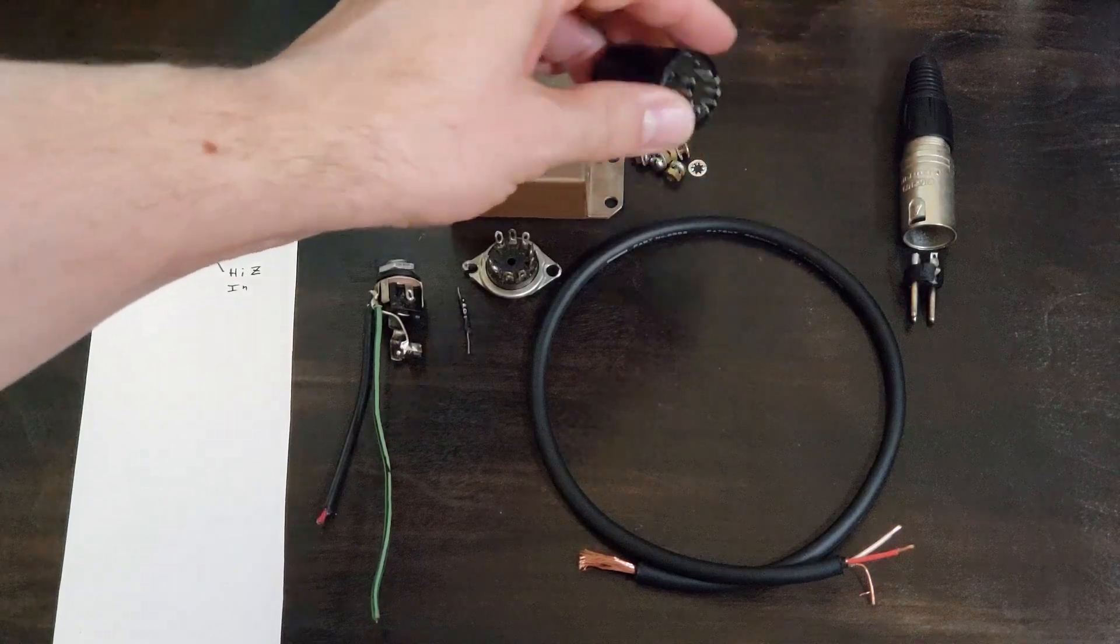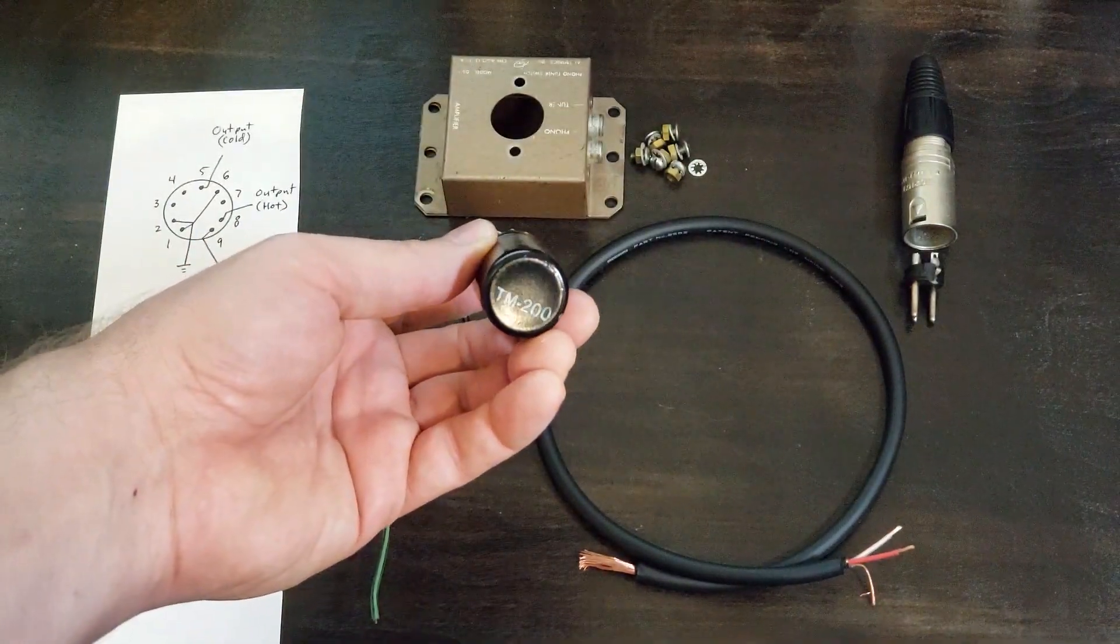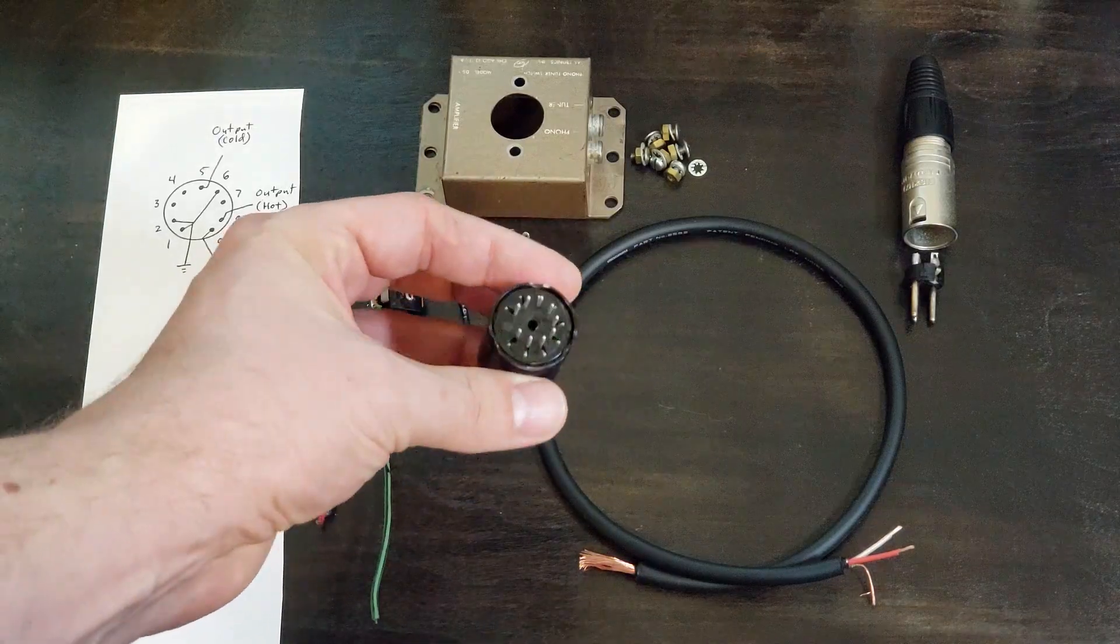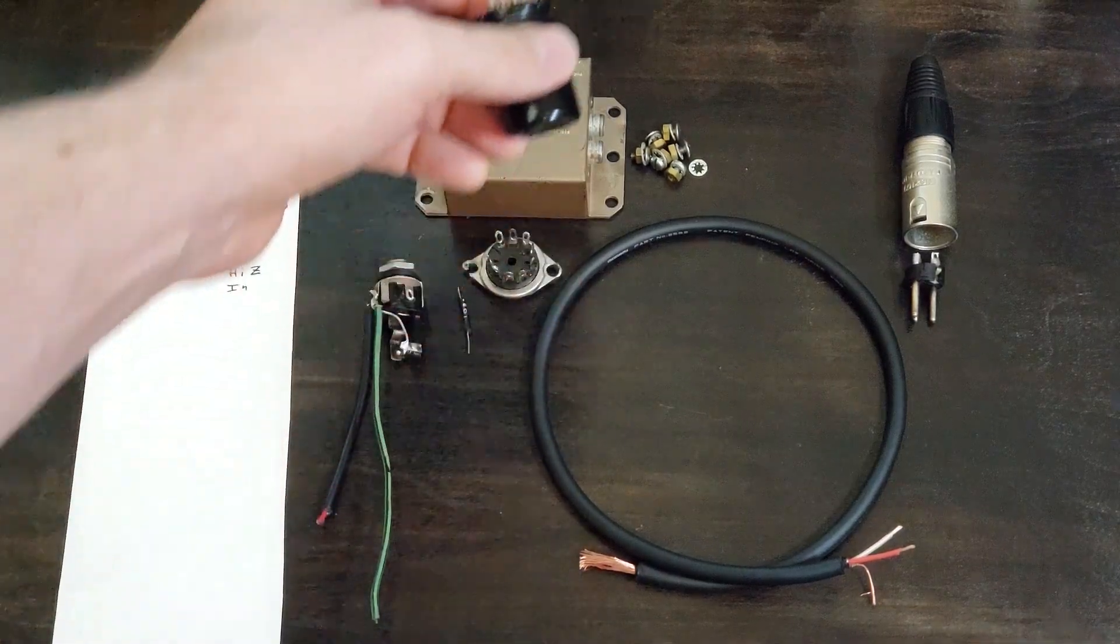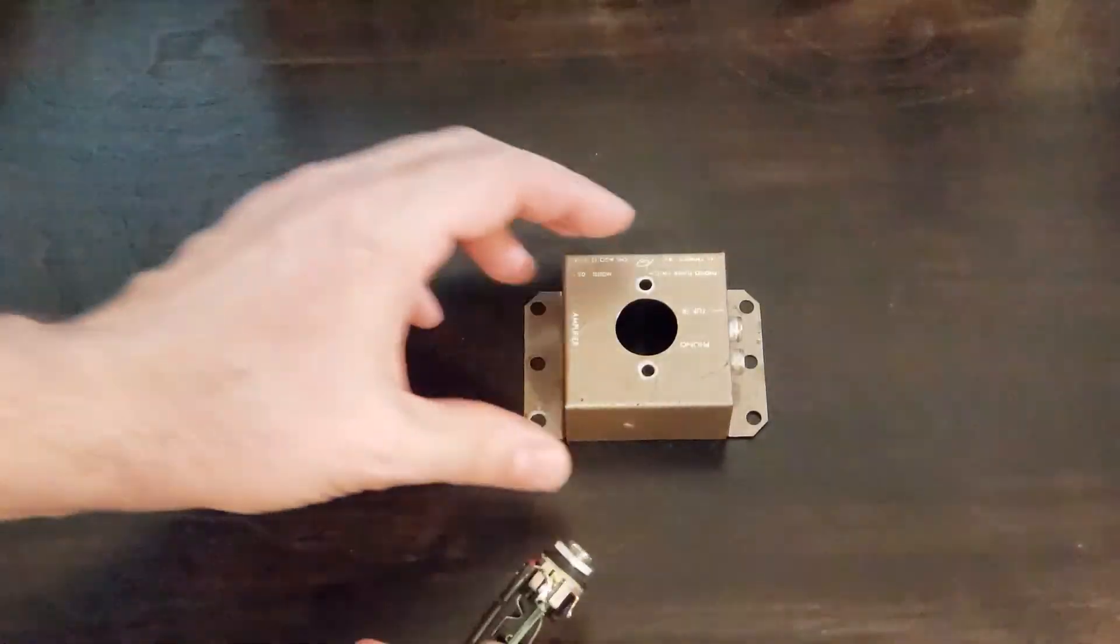This transformer converts high Z signals from your bass or guitar pickups into a low Z signal that's mic preamp ready. This happens to be a mic input transformer that we're going to wire backwards, but any high Z to low Z transformer would work.